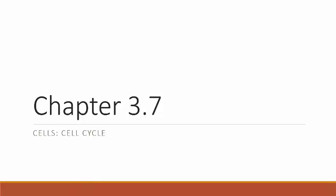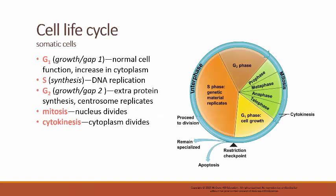We have one last topic to talk about before we are done with cells, and that is to look at the way that cells go about reproducing and the activities of what are referred to as the cell cycle — the life cycle of an individual cell. So we'll just hop right in.